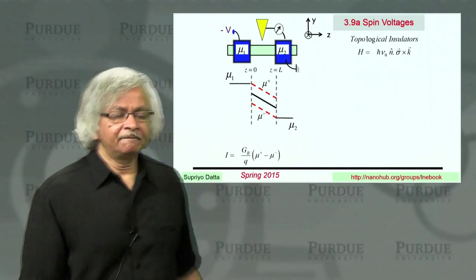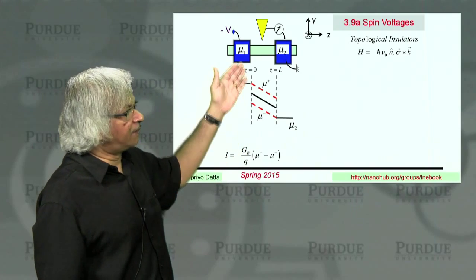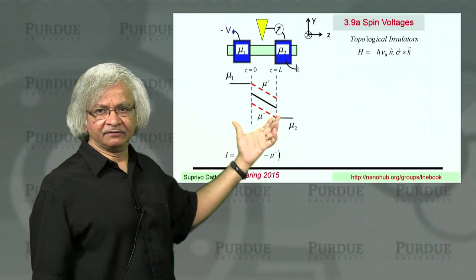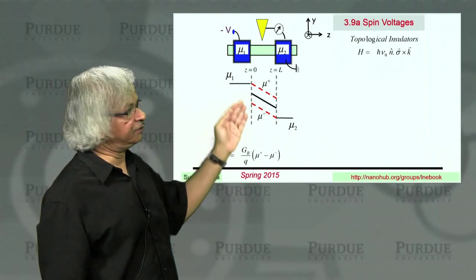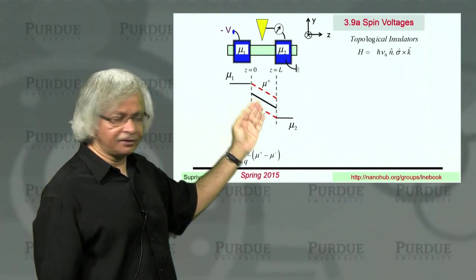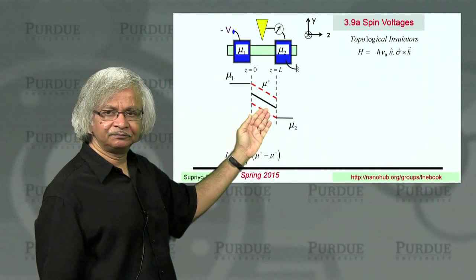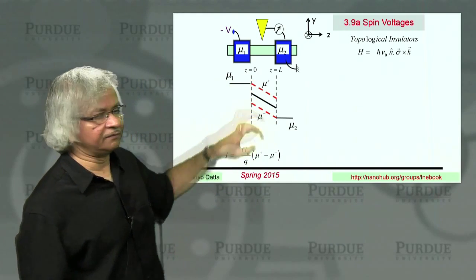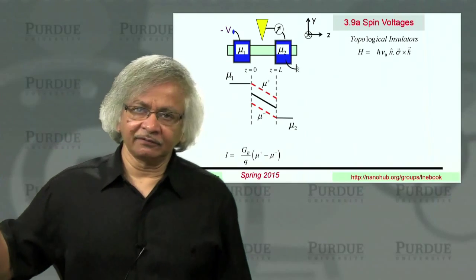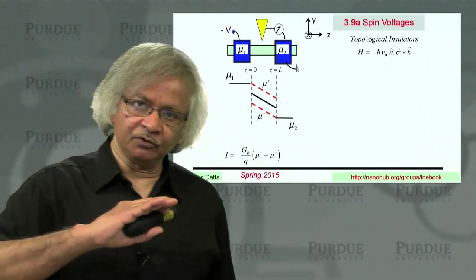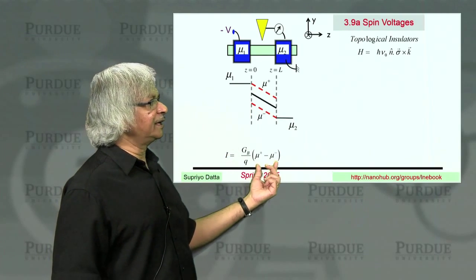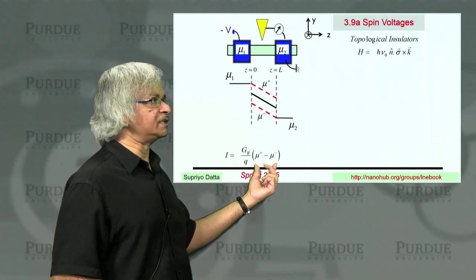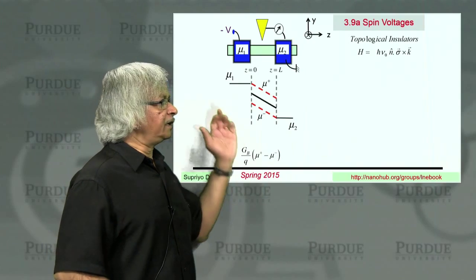Because as you remember, this unit was about these quasi-Fermi levels. That is, the idea that if you look inside the channel, you have an average electrochemical potential. And then there's these two quasi-Fermi levels, one for right-moving electrons and one for left-moving electrons. And the current is related to their difference between the two quasi-Fermi levels.